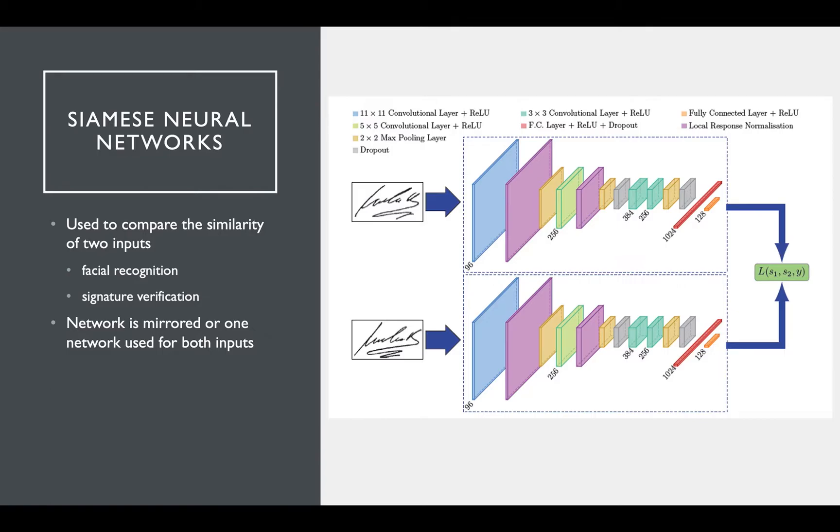When both inputs are passed through, the extra bit that really makes this a Siamese neural network is this last layer that computes the distance between the inputs. This distance tells us how similar the inputs are.